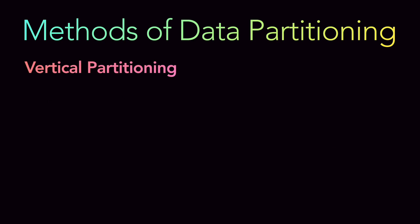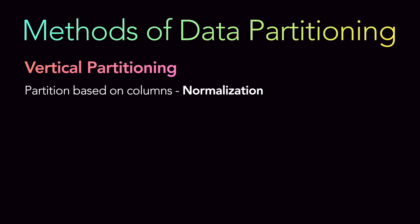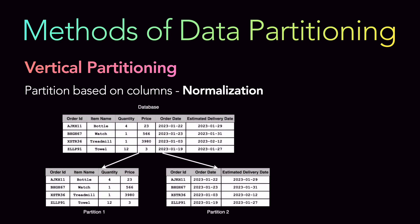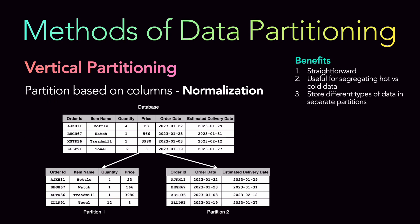The next type is vertical partitioning, which means partitioning based on columns — also called normalization. Looking at the same database, partition one contains order ID, item name, quantity, and price, while partition two contains order ID, order date, and estimated delivery date. The order ID is the key and you are partitioning based on columns. It is straightforward, supported in multiple databases, and very easy to do. It is useful for segregating hot versus cold data — columns your users frequently access are hot data, while metadata or infrequently used columns are cold data.